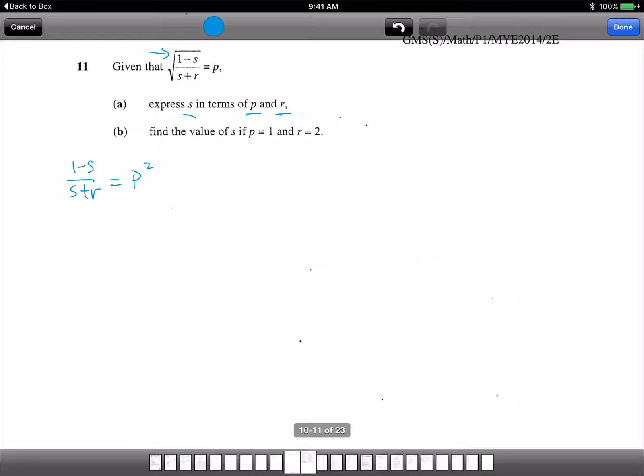At least the square root is gone. Once the square root is gone, you can multiply it out. 1 minus S equals to S plus R times P squared. The denominator multiplies to the right hand side. And then simply expand the whole thing. P squared S plus P squared R.